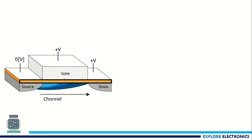If you look at the physical structure of a MOSFET, we can see the voltage we are going to apply for MOSFET operation — that is VGS from the gate and VDS from the drain with respect to the source terminal. So these two voltages are responsible for MOSFET operation.